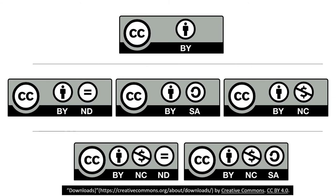CC licenses have long names, but sometimes you also see short names for them. BY is short for attribution, ND is short for non-derivatives, SA is short for share alike, and NC is short for non-commercial. You will see them quite often, so spend some time to understand and remember them.